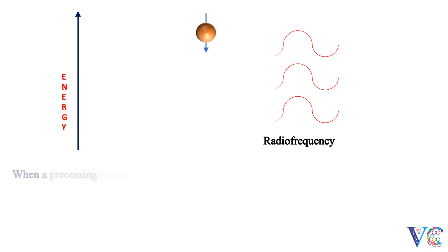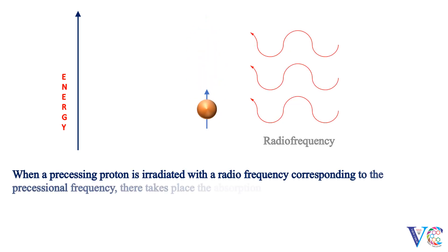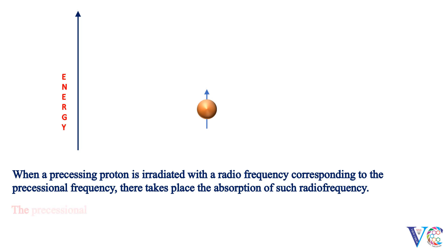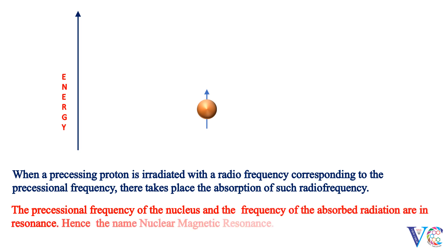When a precessing proton is irradiated with a radio frequency corresponding to the precessional frequency, there takes place the absorption of such radio frequency. The precessional frequency of the nucleus and the frequency of the absorbed radiation are in resonance. Hence the name nuclear magnetic resonance. A plot of absorption of radio frequency against intensity is an NMR spectrum.